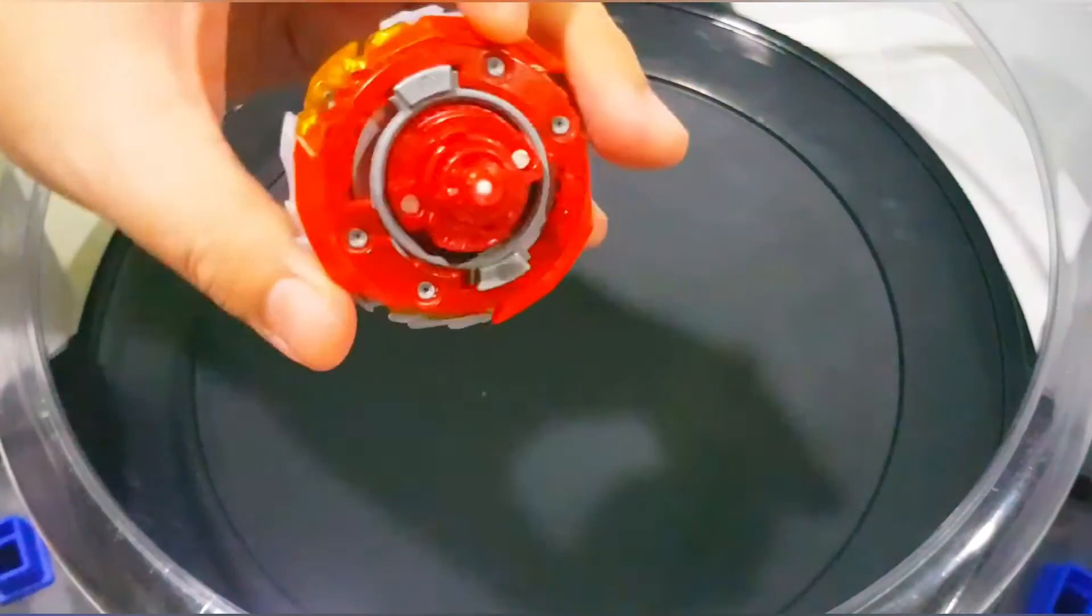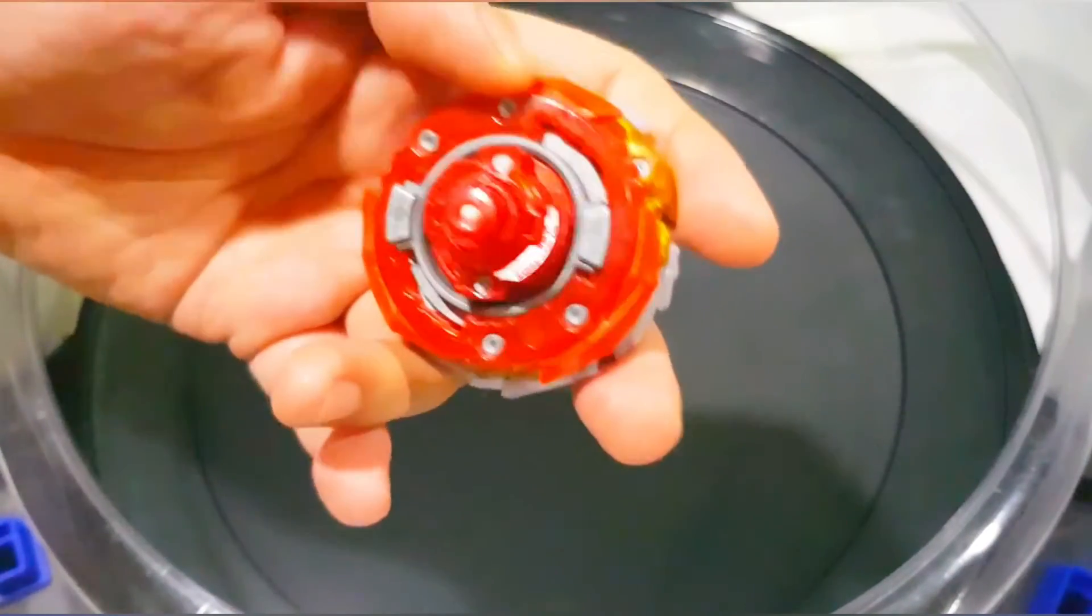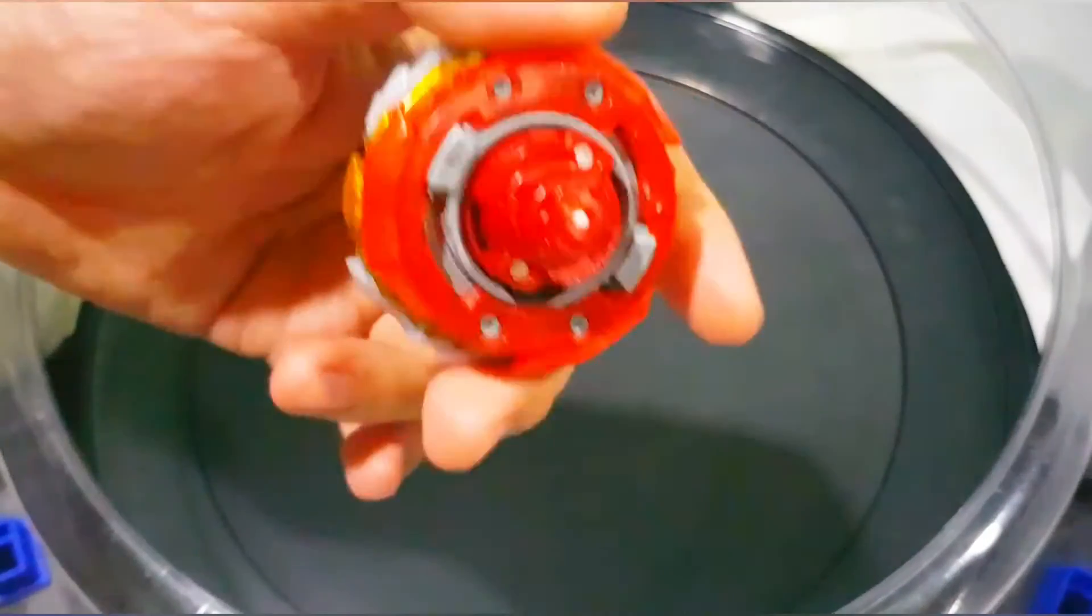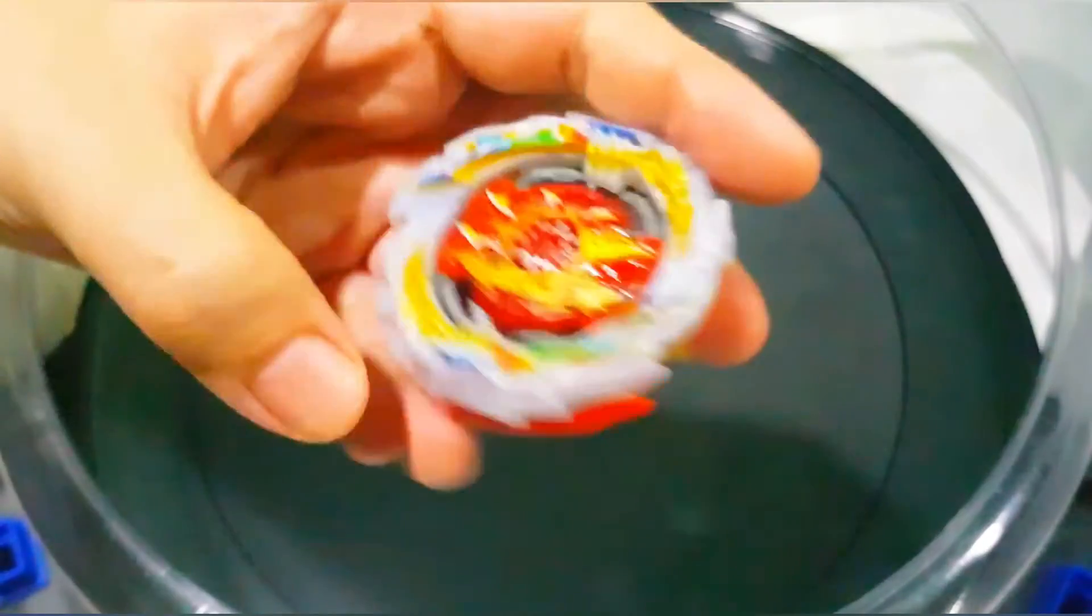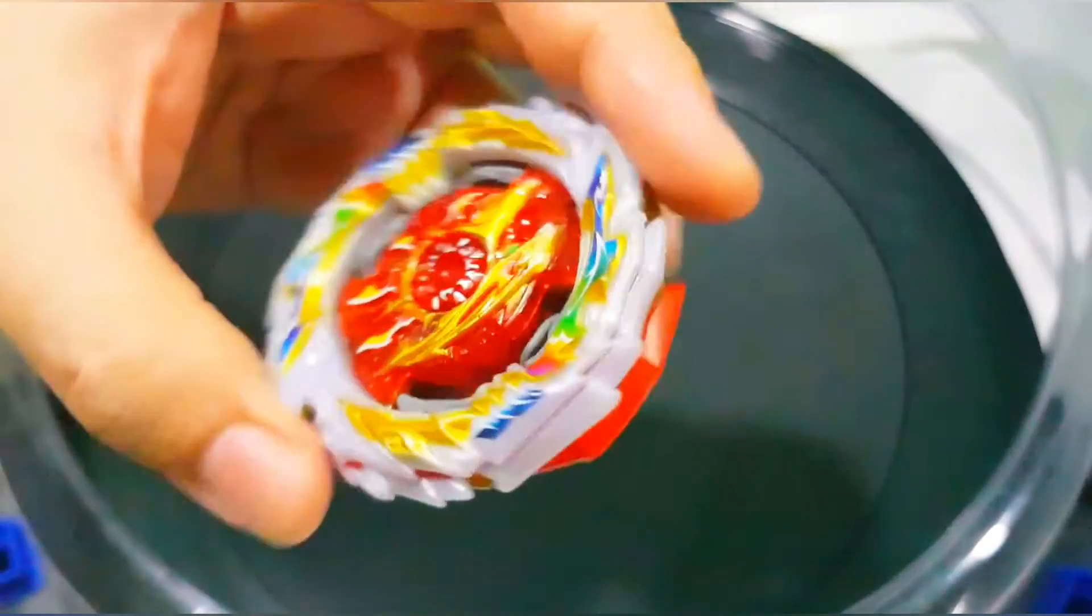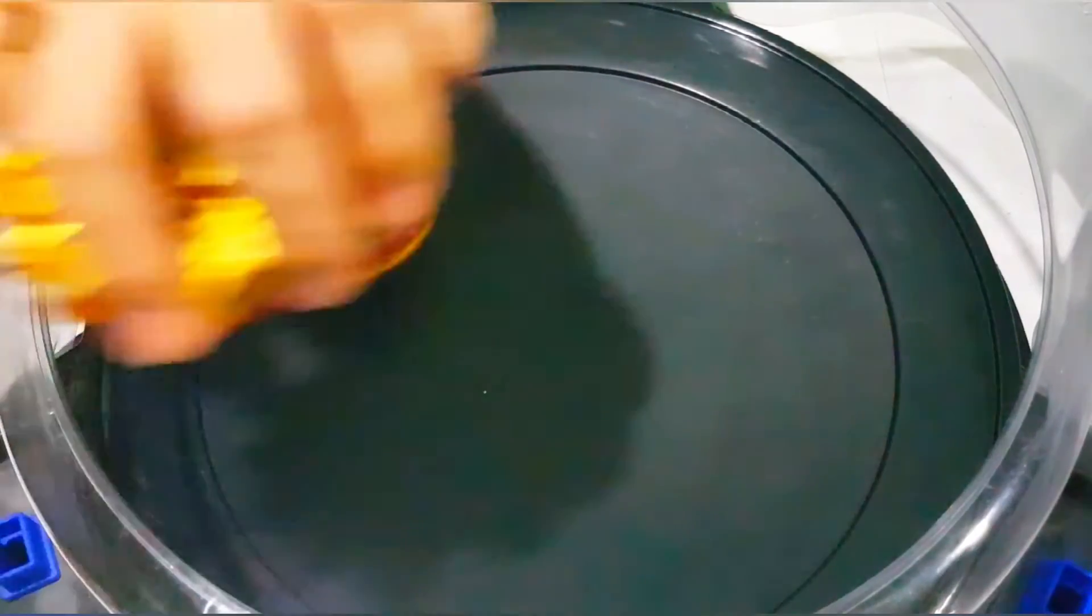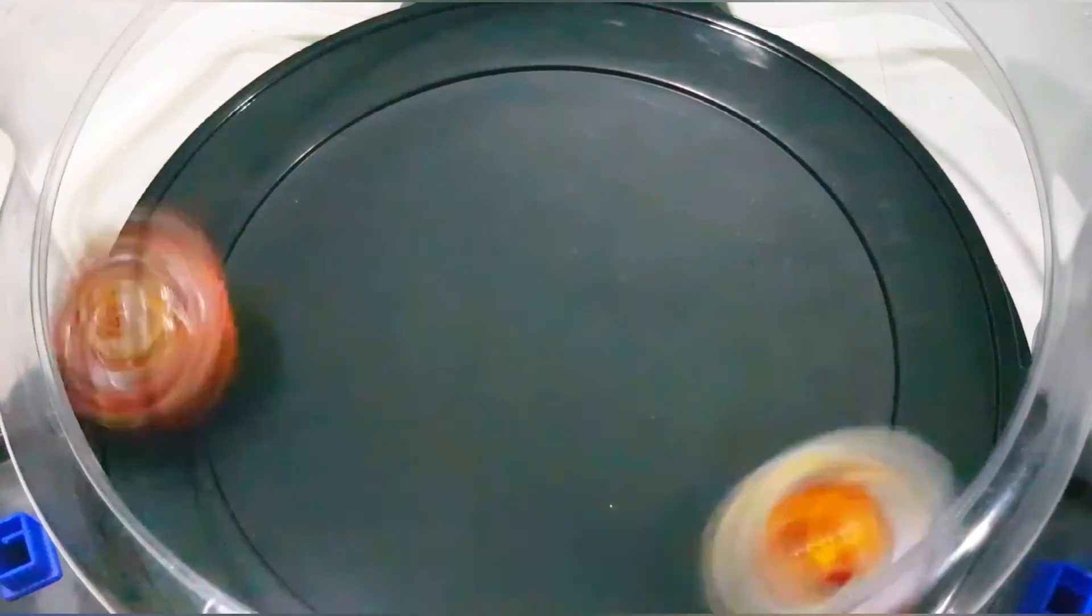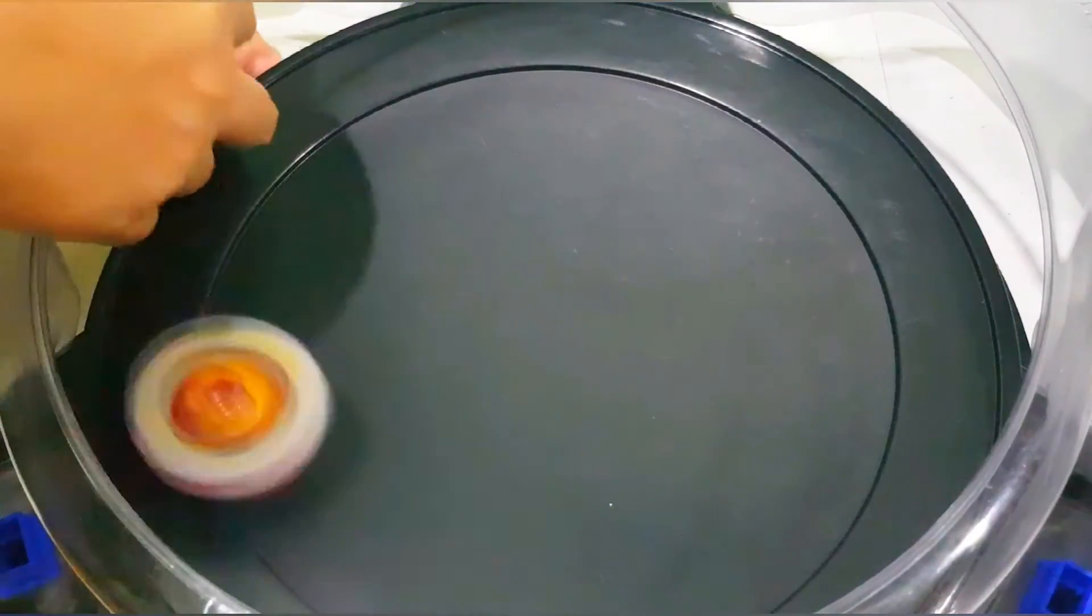I think the most balanced chassis are 2A, 2S, and 1A for me. And the most balanced ring is Tempest. It gives it more defense and stamina, especially attack drivers that don't have much stamina. So that's 2-0.